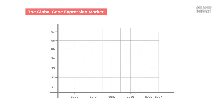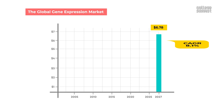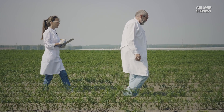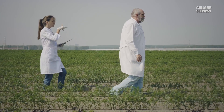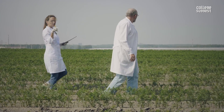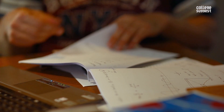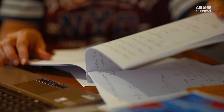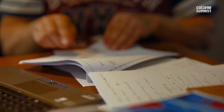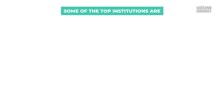The global gene expression market is expected to reach $6.78 billion by the year 2027, at a CAGR of 8.1%. Gene expression promises to tap into a previously unexplored segment in the wide and thriving genetic engineering industry. Therefore, to be among the finest in this prosperous and competitive field, it is imperative that you study in a top-notch institution.